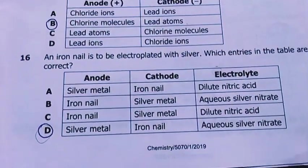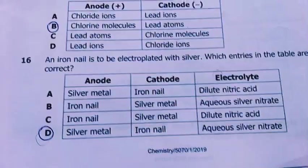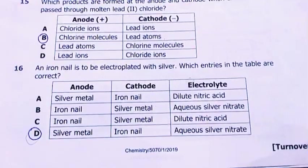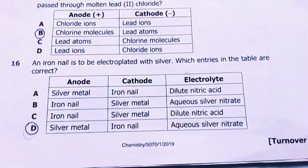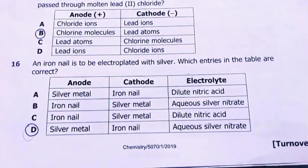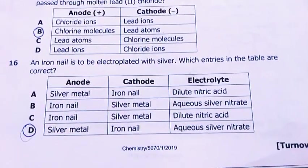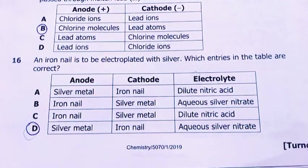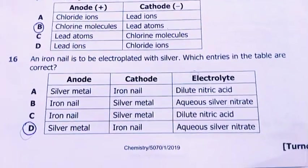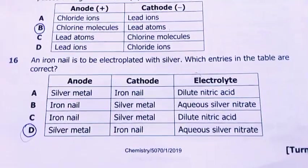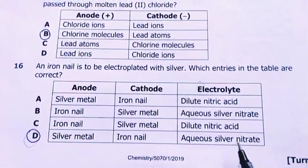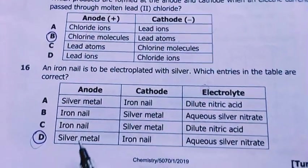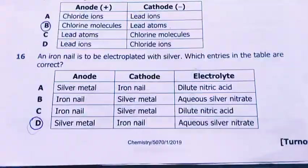Number 16. An iron nail is to be electroplated with silver. Which entries in the table are correct? My answer was D. At the anode, put silver metal. At the cathode, put the iron nail. The electrolyte should be aqueous silver nitrate. Therefore the silver from the electrolyte will be deposited onto the nail as the anode dissolves. The answer is D.